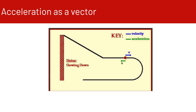Now as it goes on the straightaway, notice that the acceleration vector is in the opposite direction of the velocity vector, meaning the object is slowing down. The marble is getting slower due to friction on the track, so the velocity vector and the acceleration vector are pointing in opposite directions.